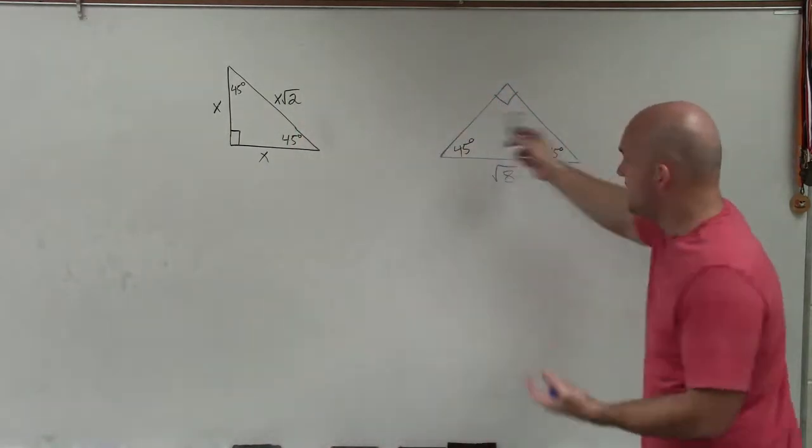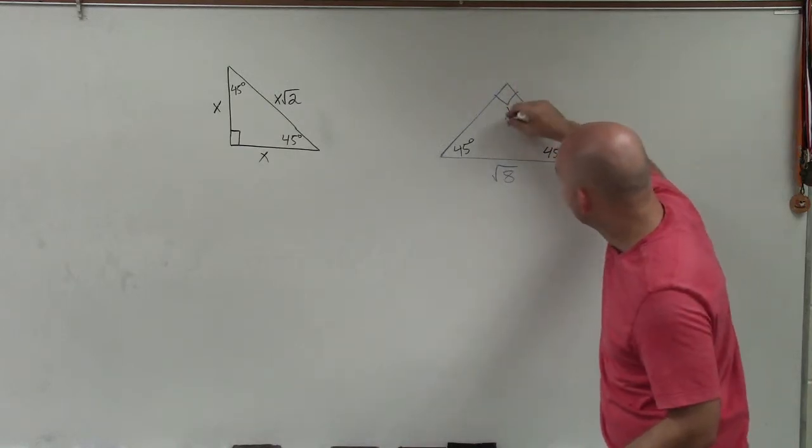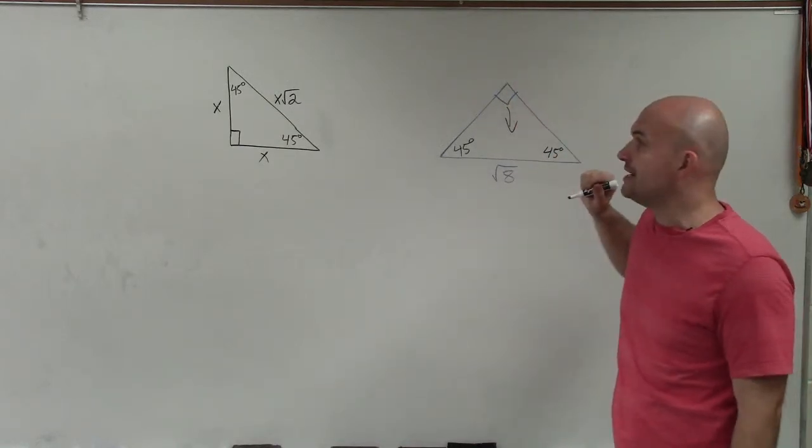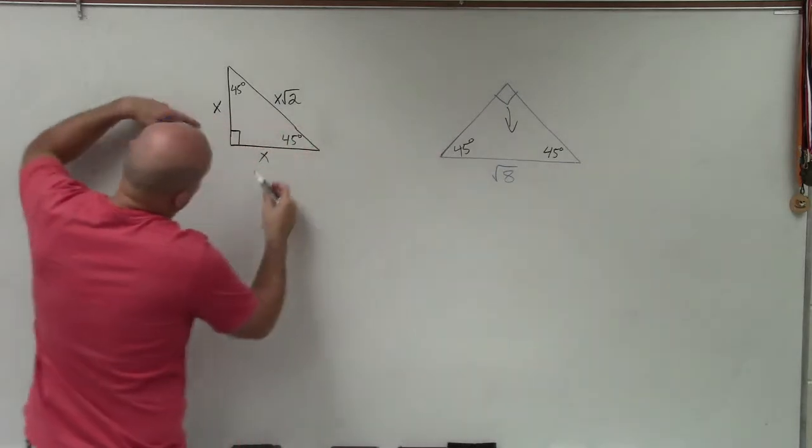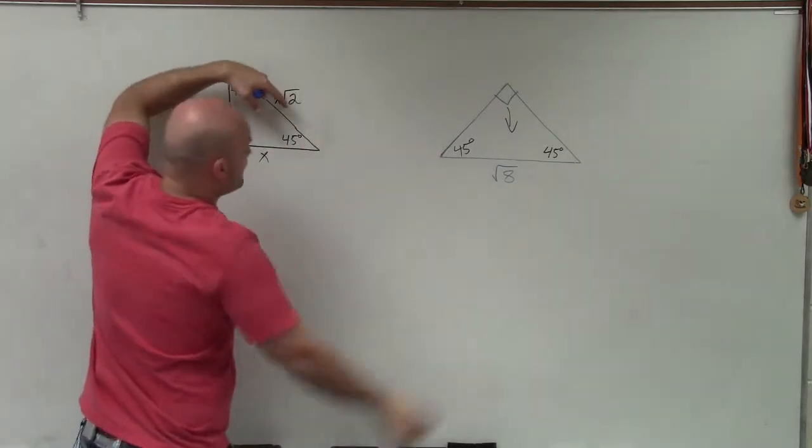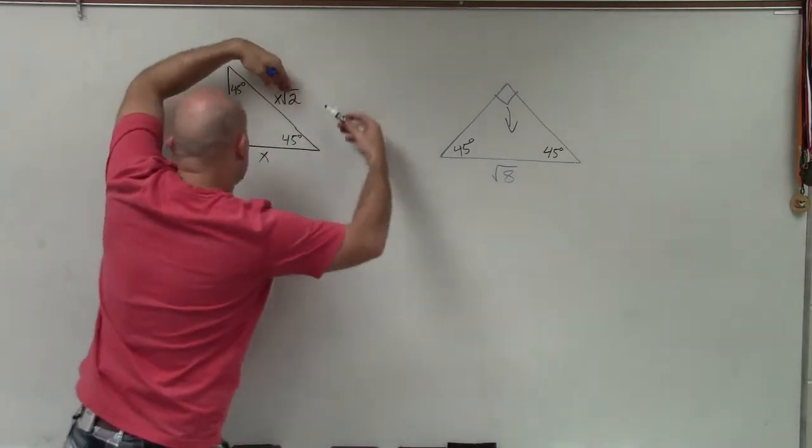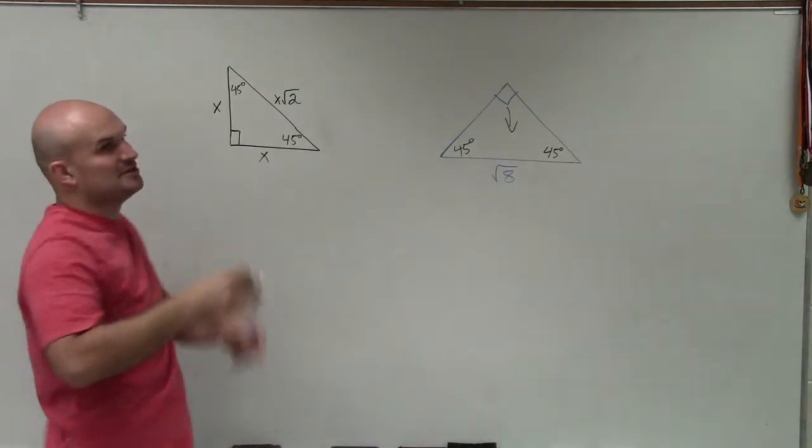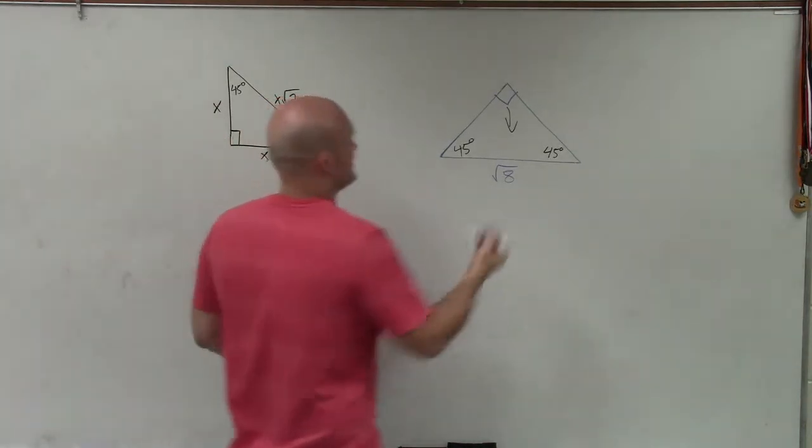But now we're not given the legs. We don't know what the legs are. We're given the hypotenuse, because it's directly across from the right angle. So if we're going from the legs to the hypotenuse, we multiply by the square root of 2. To go from the hypotenuse to one of the legs, we have to divide by square root of 2.